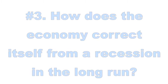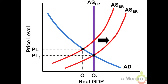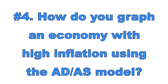Number three: how does the economy correct itself from a recession in the long run? Classical economic theory suggests the government should do nothing, because the economy will self-correct. In the long run, workers accept nominal wage cuts as inflation expectations and production costs fall. The SRAS curve shifts right toward the LRAS curve, restoring full employment — the price level decreases, real GDP increases, and the unemployment rate decreases.